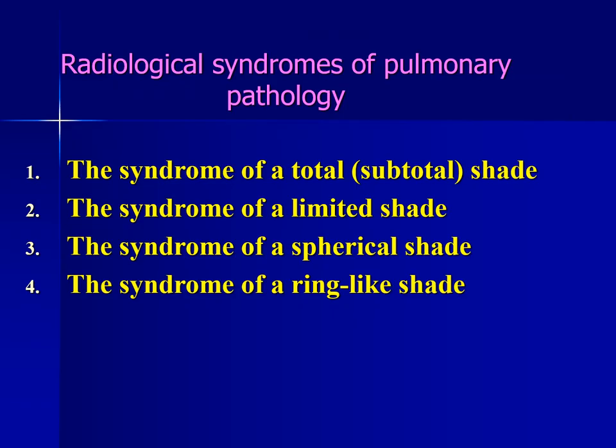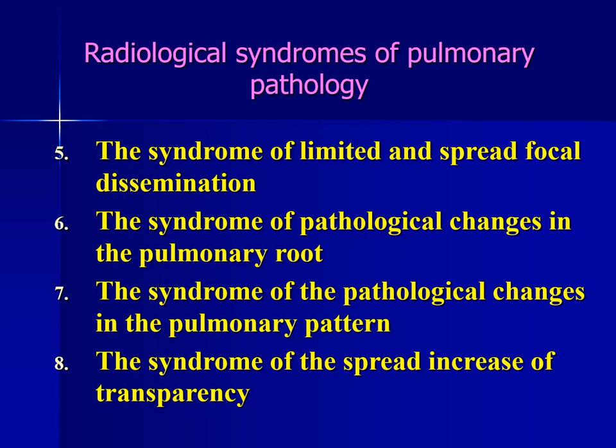We have a list of radiological syndromes of pulmonary pathology: the syndrome of a total or subtotal shade, syndrome of a limited shade, syndrome of a spherical shade, syndrome of a ring-like shade, syndrome of limited and spread focal dissemination, syndrome of pathological changes in the pulmonary root, syndrome of pathological changes in the pulmonary pattern, and syndrome of the spread or limited increase of transparency.